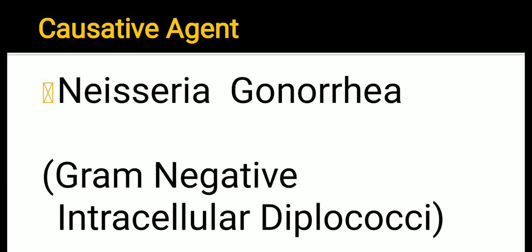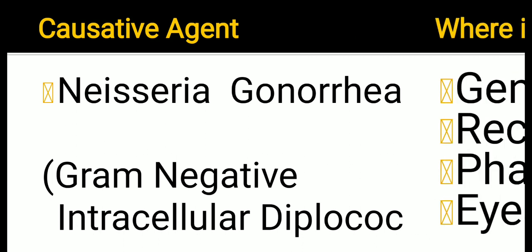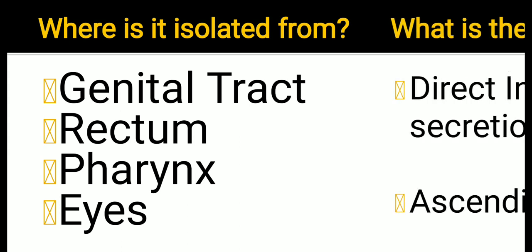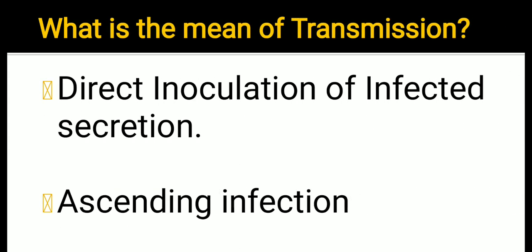Neisseria gonorrhoeae is isolated from the genital tract, rectum, pharynx, and eyes. The means of transmission are direct inoculation of infected secretions and ascending infection.